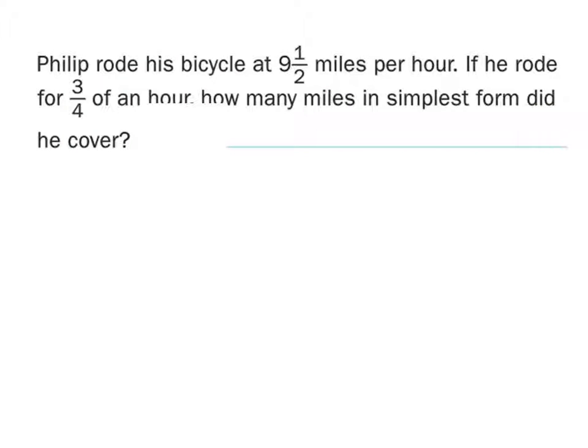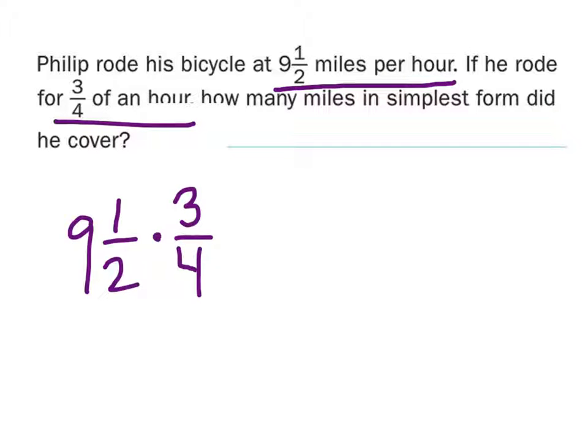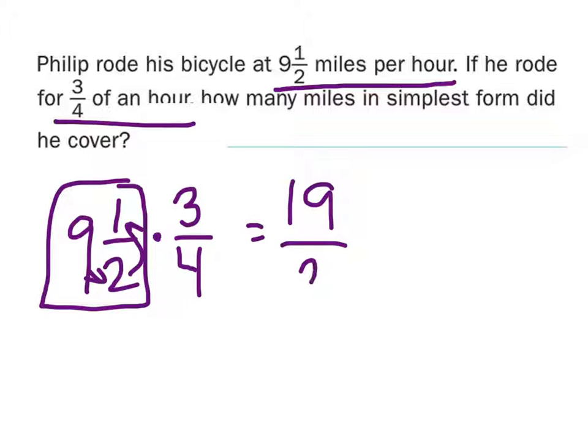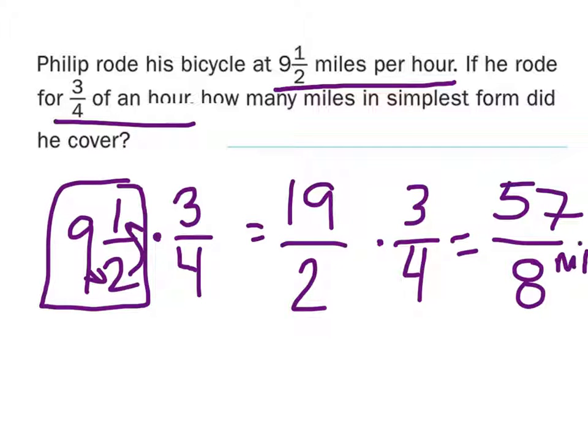No answers should be as decimals. We want these as fractions. For now they are. All right, let's look at this one. Philip rode his bicycle at nine and a half miles per hour. If he rode for three-fourths of an hour, how many miles in simplest form did he cover? Well, this is how much per hour he's covering. So if he rode this many hours, what do we do? Nine and a half times three-fourths. We need this to be an improper fraction. So nine times two plus one would be nineteen halves times three-fourths. This is fifty-seven-eighths miles. Done.